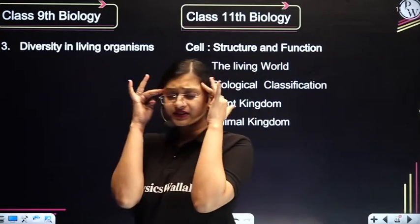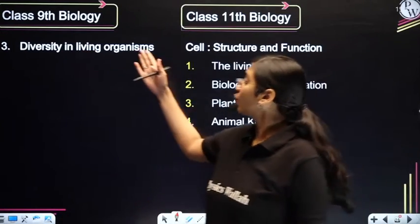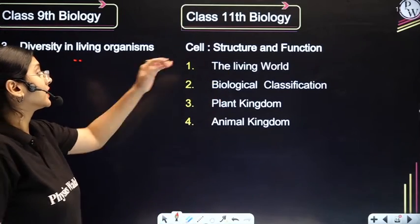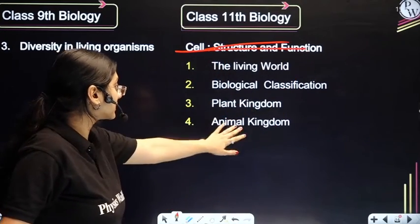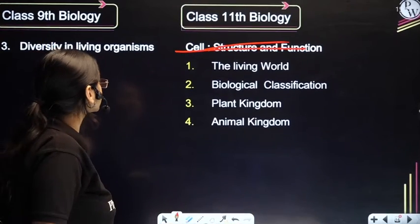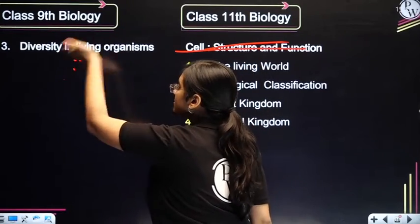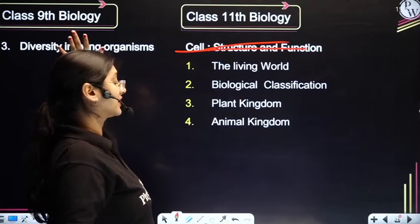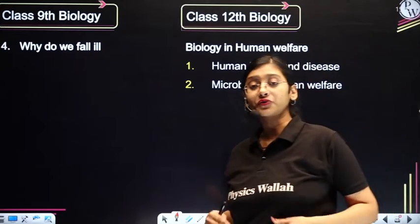Diversity in Living Organisms is super important. The whole chapter is split into four chapters in 11th standard biology: The Living World, Biological Classification, Plant Kingdom, and Animal Kingdom. In the 9th standard chapter you are already studying classification, animal kingdom, and plant kingdom. That is why the class 9th and 10th syllabus, especially science, is very important for NEET preparation.